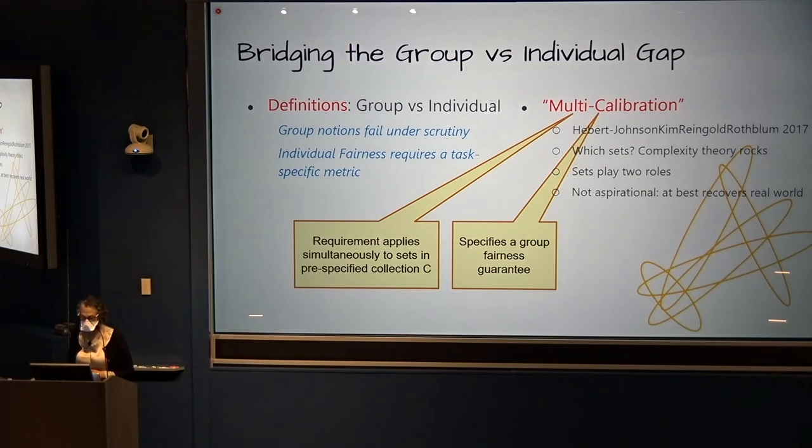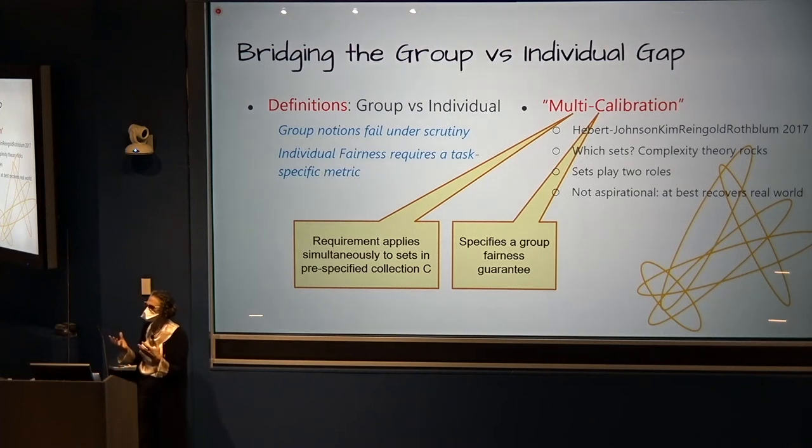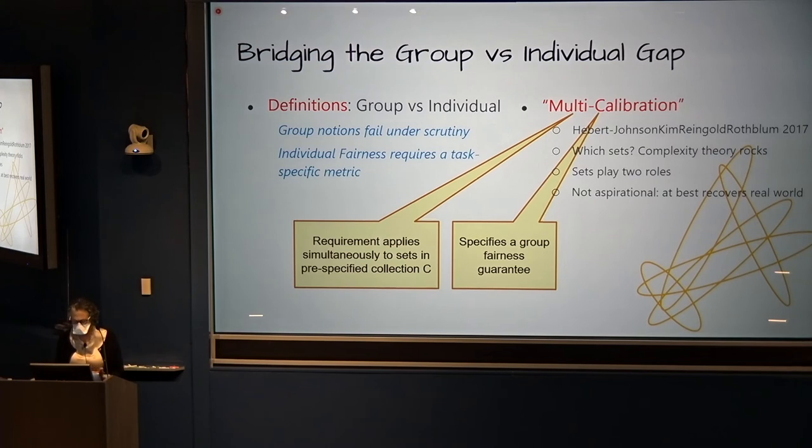In multi-calibration, the requirement is that for a possibly very large collection of sets of instances, the scoring function has to be calibrated on all of those sets simultaneously. If you look at any one set all by itself, the predictor will be calibrated on that set. And that's true for all of them. Now you should be asking again that question that I mentioned earlier. Who chooses the sets? If this is a fairness guarantee, which are the sets that are worthy of having it guaranteed for them that the predictor should be calibrated on this set? Whose job it is to figure that out?